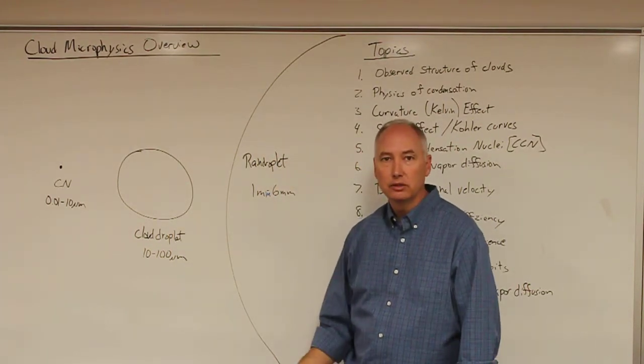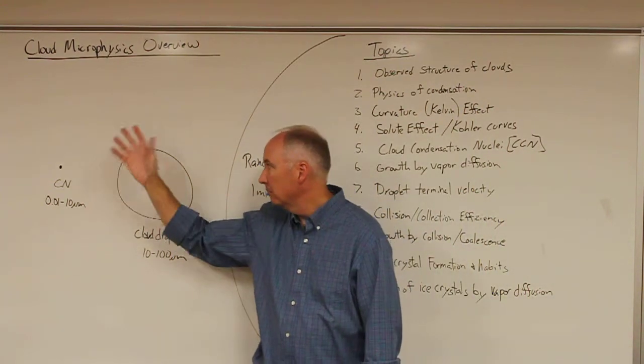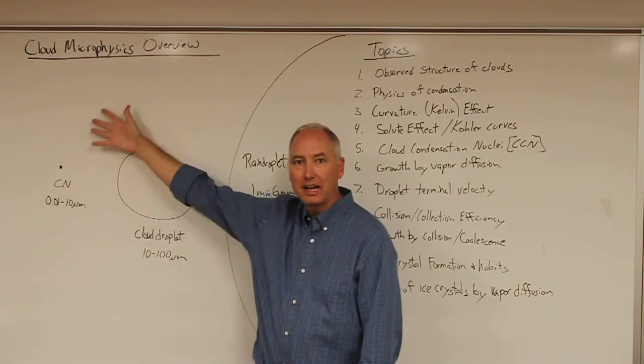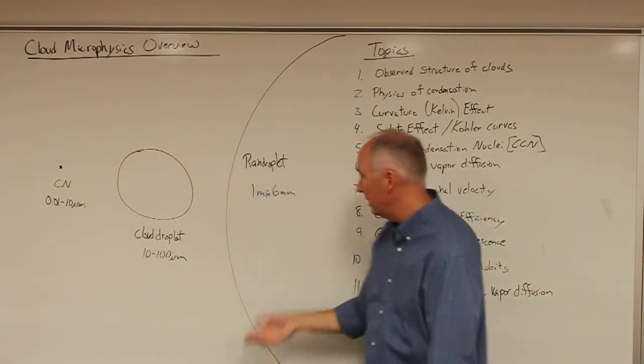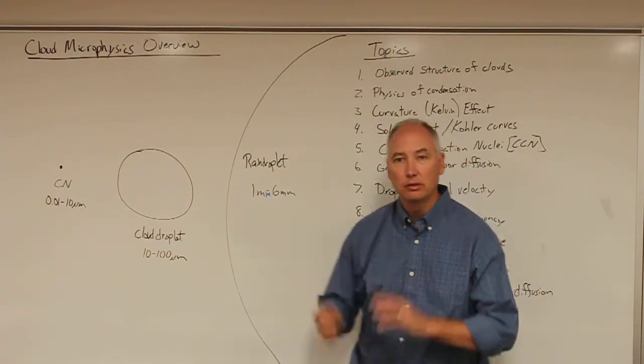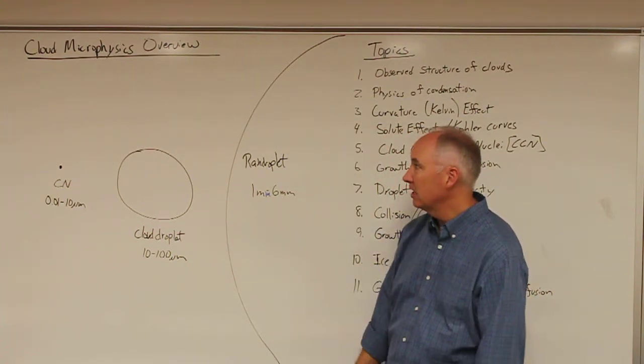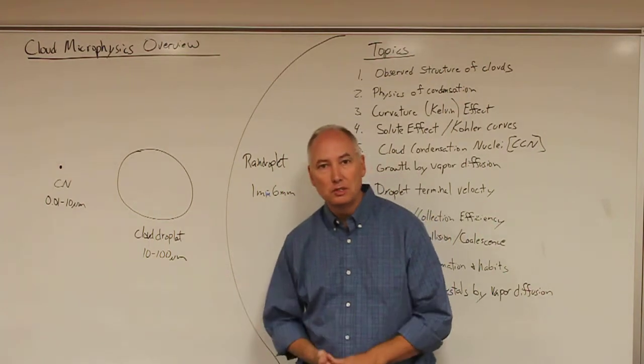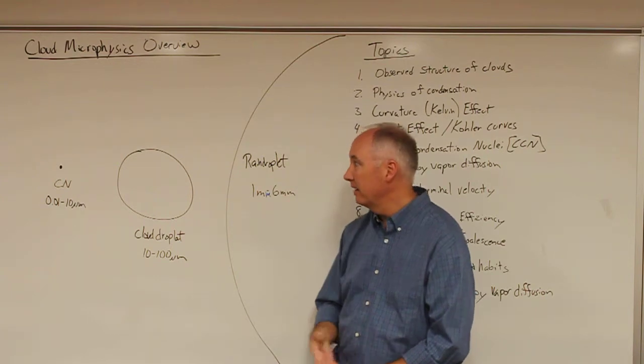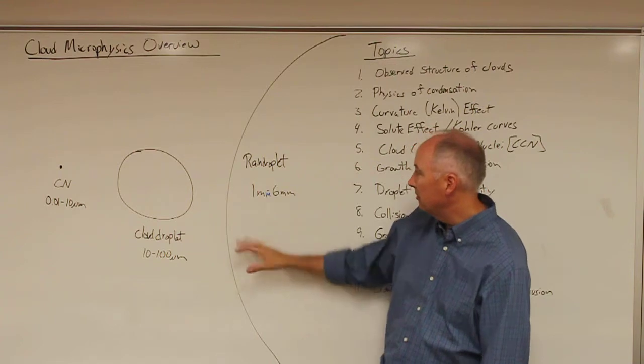The ultimate question we're trying to answer in this section of the course is: how do you grow a rain droplet from a particle and gas in the atmosphere—water vapor—in about an hour? Because that's the observation of how long it takes for a cloud to form before it can begin to precipitate. We have to come up with the mathematical description of this entire process so we can quantitatively identify how this process moves forward and at what rate these droplets actually grow.